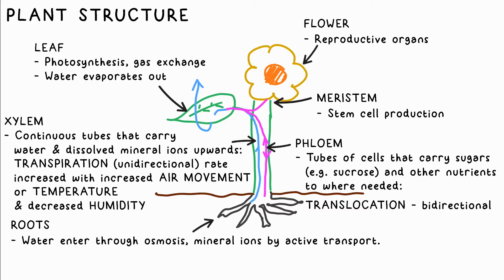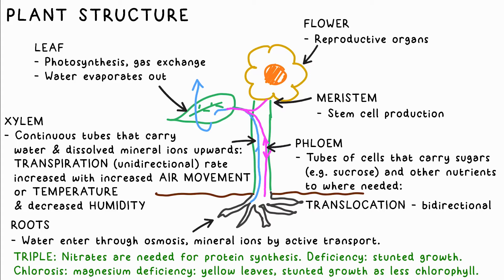Phloem are the conveyor belts of cells that transport sugars, food, and sap up and down the plant — we call this translocation, and it's bi-directional. The rate of transpiration can be increased by increasing the temperature, decreasing the humidity, or increasing air movement. For triple science: lack of nitrate ions means the plant can't synthesize proteins effectively, which stunts growth.